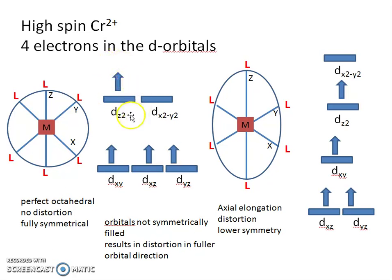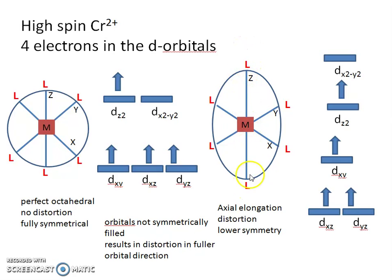Since you have more electrons in the dz² orbital than in the dx²-y² orbital, there will be more repulsion in the z direction. This higher repulsion causes the ligands in the z direction to move further out, so the bond between the metal and the donor atom of the ligand becomes elongated. This is axial elongation.